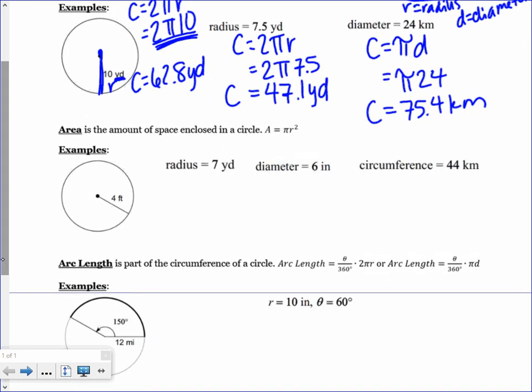So now, looking at area, that's the amount of space that is inside of your circle. Area is πr².